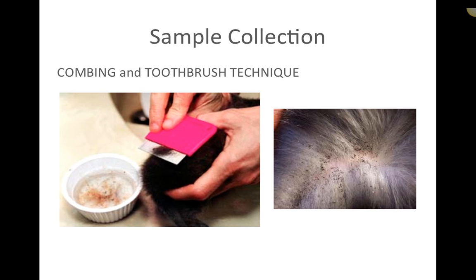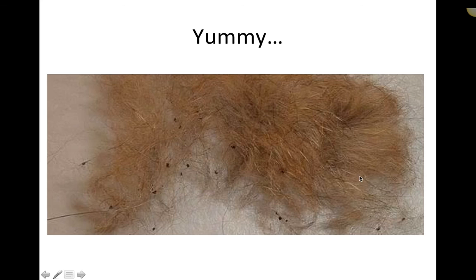Another type of sample collection is the combing and toothbrush technique. Combing is more for parasitology — looking at flea dirt. The toothbrush technique can be used to collect cytology, particularly for yeasty skin or oral use, to remove cells from the oral cavity. The material you acquire by scratching up an animal's coat with a comb or toothbrush — getting the superficial layer of epithelial cells, dry epithelial cells, and a layer of hair — is called SCURF.